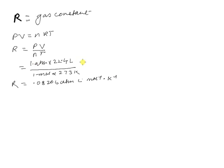From Avogadro's law, if a gas is kept at the same temperature and pressure and has the same volume, it will contain the same number of molecules. If we take the number of molecules as one mole, with temperature 273 Kelvin and pressure 1 ATM, the volume will be 22.4 liters for any ideal gas. This gives us our first value for R.